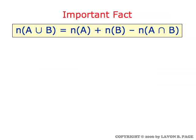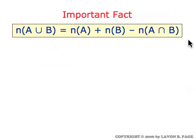An important basic fact about the number of elements in sets is when you're looking at a union of two sets, the number of elements in the union is the number in the one plus the number in the other minus the number in the intersection.